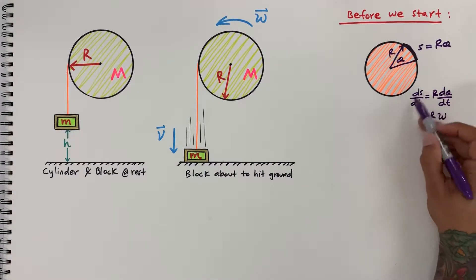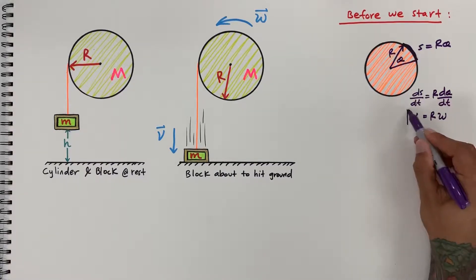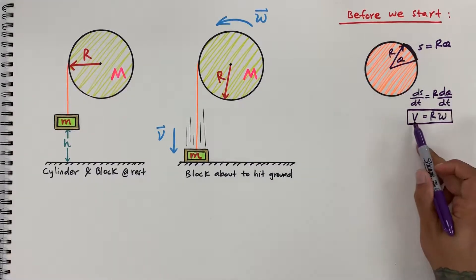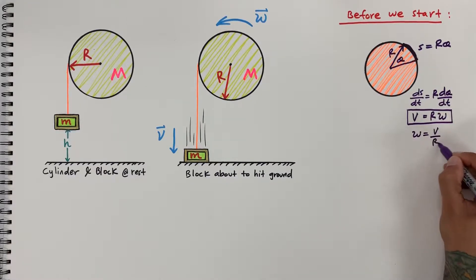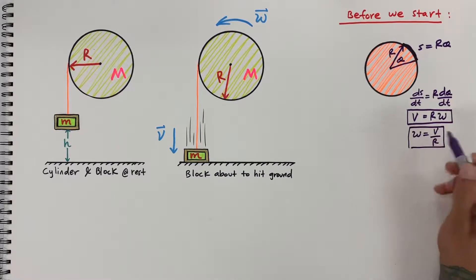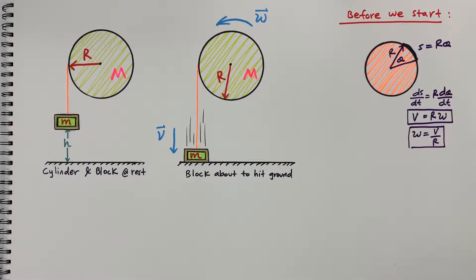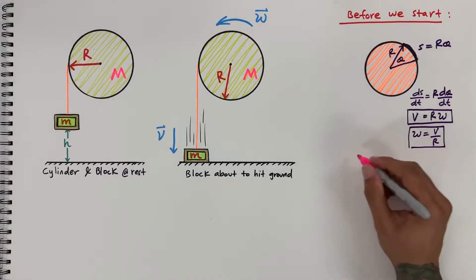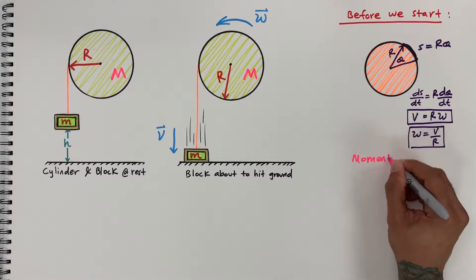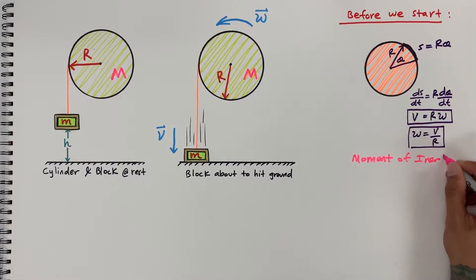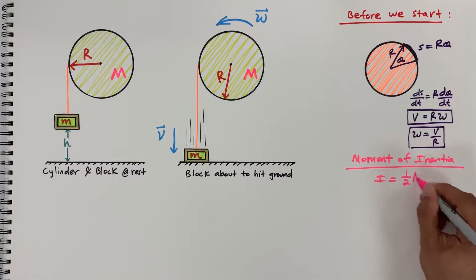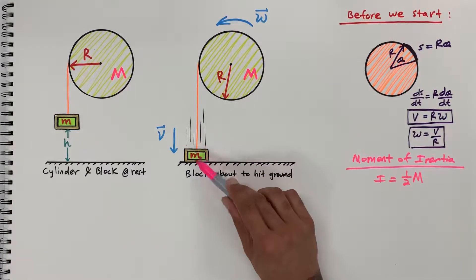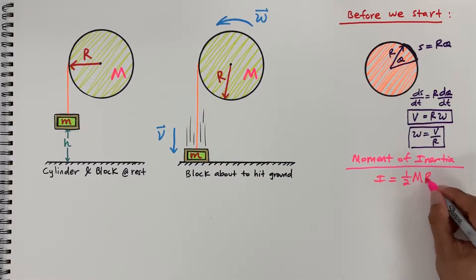d(theta)/dt is omega, and ds/dt is velocity, so we get v = r·omega. Rearranging, omega equals v over r — that's the term we're interested in. We also need the moment of inertia for our cylinder: I = ½MR², where big M is the mass of the cylinder and little m is the mass of the block.